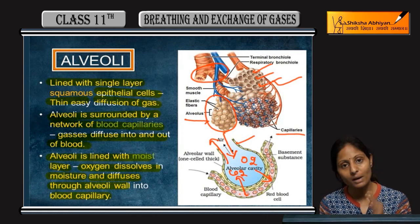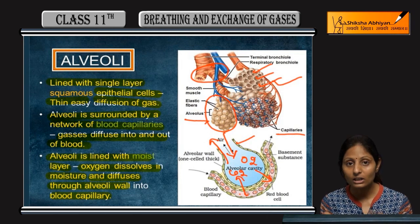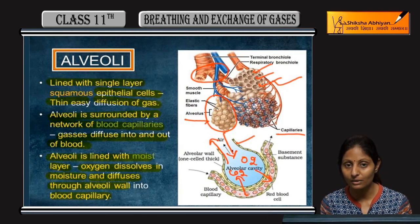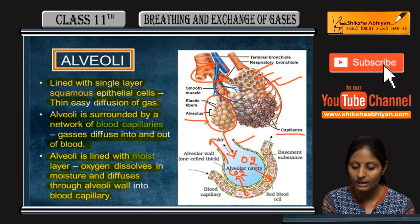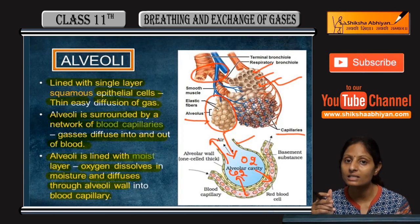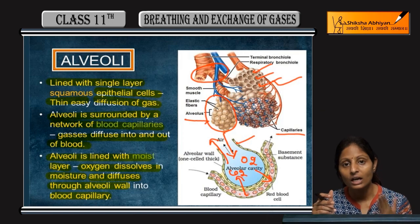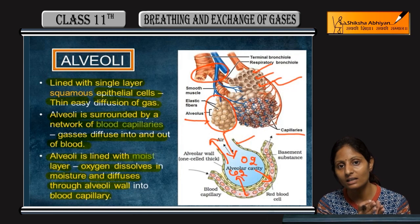Oxygen from the alveoli cells enters the blood capillaries and is carried by the blood vessels. CO2 from the blood returns to the lungs and is exhaled through the breathing process. In this way, gas exchange takes place in the alveoli portion.